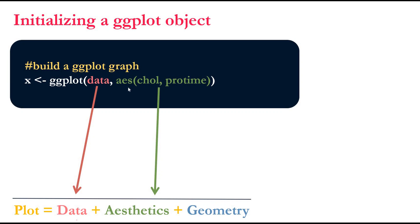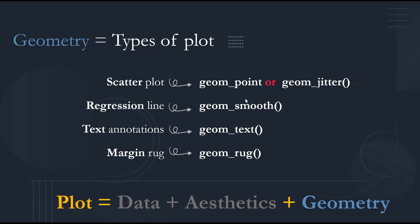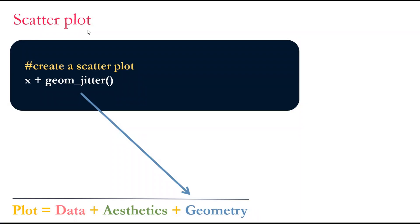If you already installed it, just load it into R. Then we need to initialize the ggplot object — here we are specifying where the data will come from, and the aesthetics specifying which variables we want to use: x is cholesterol, y is pro time. For each plot we need to use a different function. For scatter plot there is geom_point and geom_jitter — the difference is that geom_jitter avoids overplotting. We just need to add the geometry using geom_jitter to create the scatter plot.